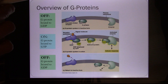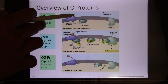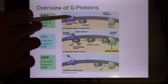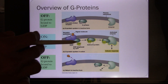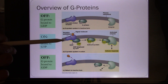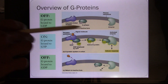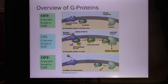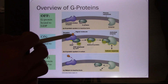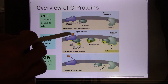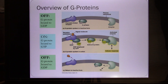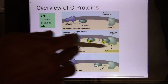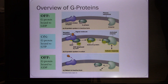When the ligand comes, it binds with the receptor on the outside. Now it activates the G-protein, and the G-protein goes to activate other proteins inside the cell. That other protein is called the second messenger, and the first messenger is the ligand. The signal transfers through the G-protein from outside to inside, activating the second messenger.